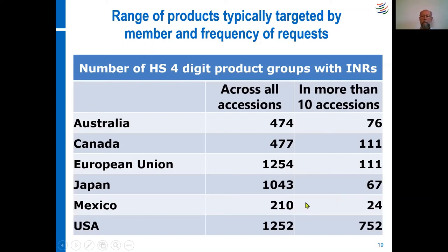Mexico has even fewer core interests, of course being a smaller country. But one thing — if ever you've been to Mexico, you will certainly see tequilas on the list of core interests, and you will probably have to grant them an INR or better market access. The US has asked for nearly all products, and differently to the EU, the US has been very persistent in asking for the same products in nearly every accession negotiation. So be aware that the US is a tough negotiating partner that is going to push you on nearly all your products.